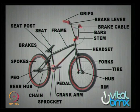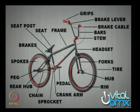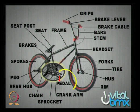These are the parts of the bicycle. The main parts are frame, bars, brakes, tyre, hub, rim, the pedal, chain, spokes, and from this you can see the pedal and the crank arm clearly.